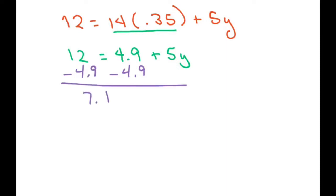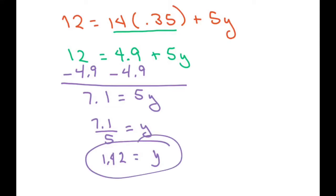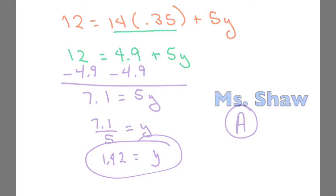Let's subtract 4.9 from both sides and you're going to get 7.1 equals 5y. Now divide both sides by 5 and you get y equals 1.42. So that's your final answer, that's for the large envelopes, and your answer therefore would be A. And that's all, thank you, have a nice day, bye bye.